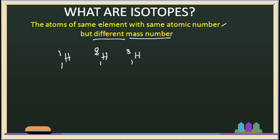Hydrogen has one electron, one proton, and zero neutrons. Hydrogen is the standard symbol.